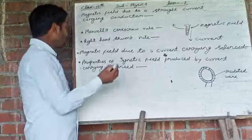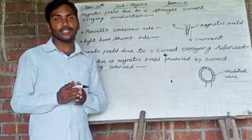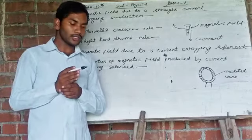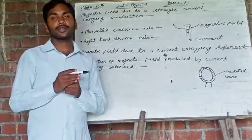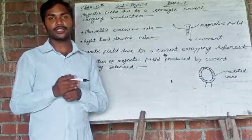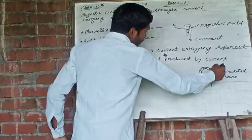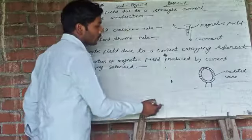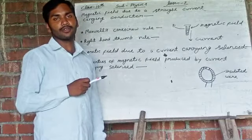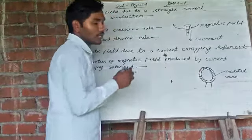After that, we will discuss magnetic field due to a current carrying solenoid. First of all, we should know what a solenoid is. An electrical device consisting of a coil of many circular insulated wires on a tube-like structure is known as a solenoid. You can see here, there is a cylindrical tube and insulated wire is circling on it. Solenoid is a Greek word which means tube-like.